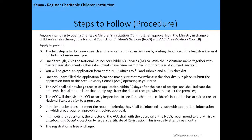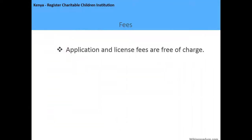The inspection checks whether the charitable children's institution has acquired the national standards for best practices. If the institution does not meet the required criteria, it shall be informed with appropriate information on which areas require improvement before approval. Once improvements are made, the institution can submit another application with the recommendations in place. If the institution meets the criteria, the director of the Area Advisory Committee, with the approval of the National Council for Children's Services, shall recommend to the Ministry of Labor and Social Protection to issue a certificate of registration. This is usually after three months.